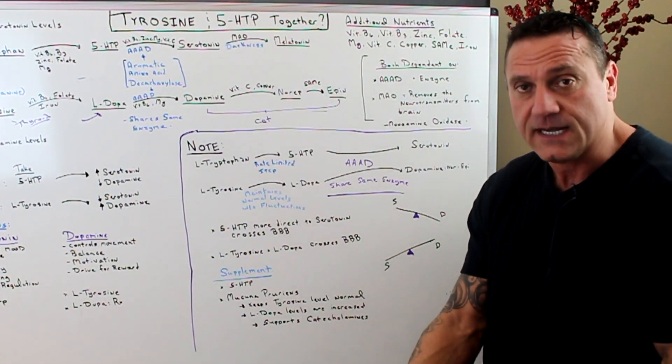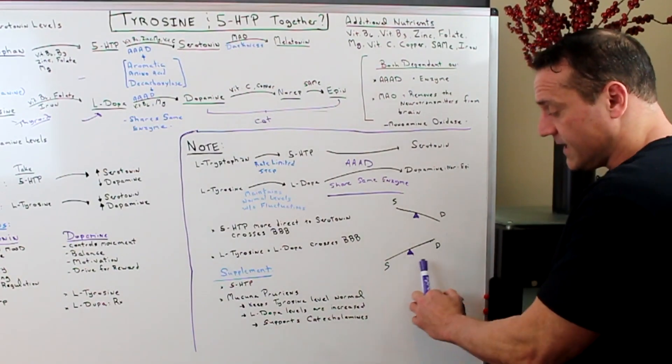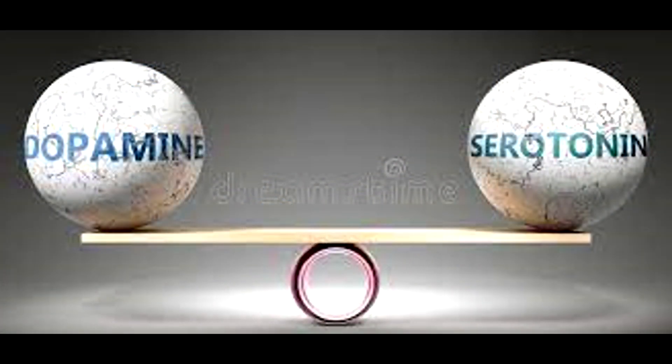Let's flip it over, if you take in too much L-tyrosine or L-DOPA or mucuna pruriens, what's going to happen? You're going to have too much dopamine and not enough serotonin. It's a balance. So you have to monitor the balance.